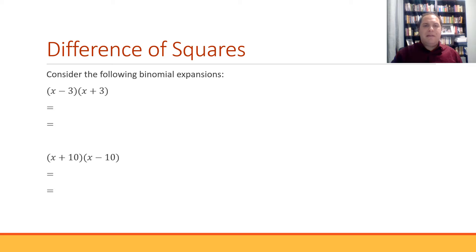Now let's consider the following binomial expansions. We'll just expand them out and see what sort of pattern we might see. Looking at our terms we've got x minus 3 and x plus 3. So the same terms, just one's a plus and one's a minus.